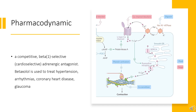Pharmacodynamics: Betaxolol is a competitive, beta-1 selective, cardioselective adrenergic antagonist. Betaxolol is used to treat hypertension, arrhythmias, coronary heart disease, and glaucoma, and is also used to reduce non-fatal cardiac events in patients with heart failure.